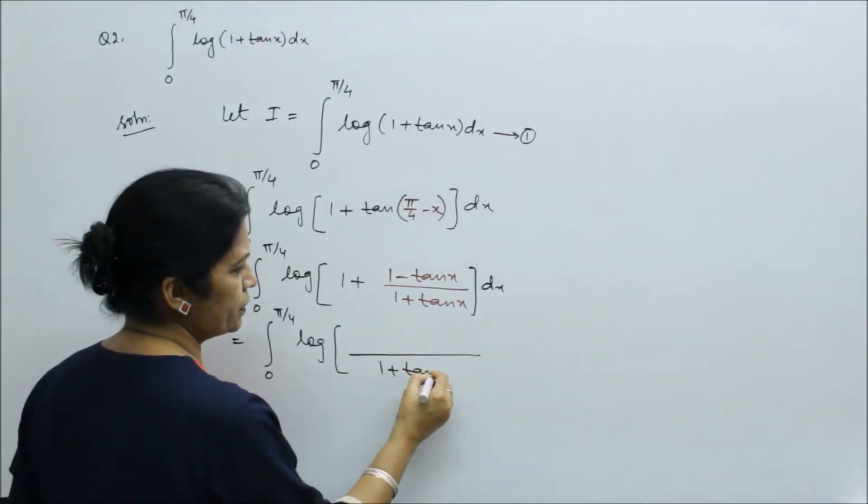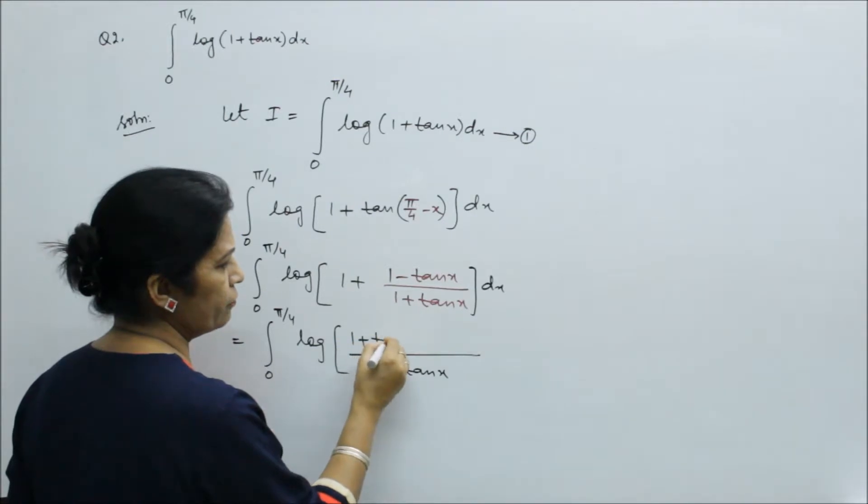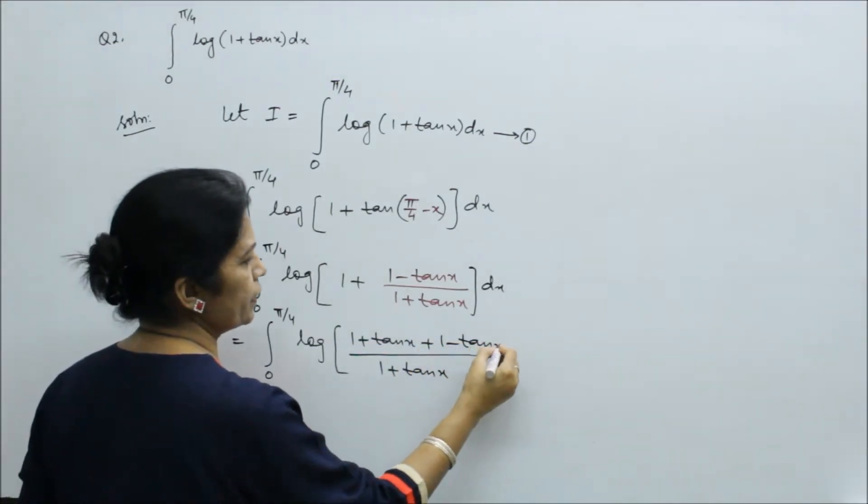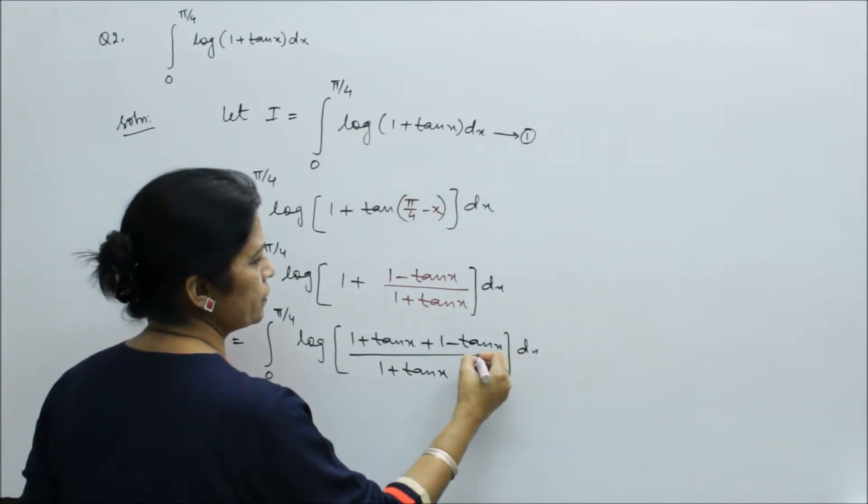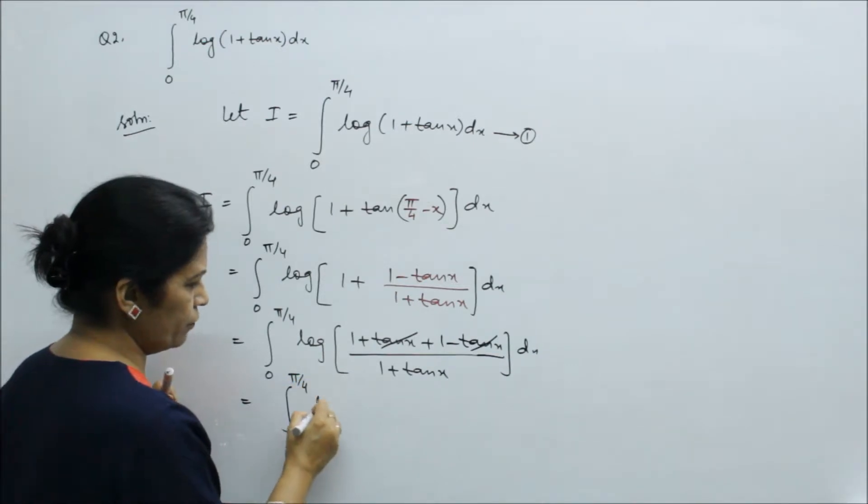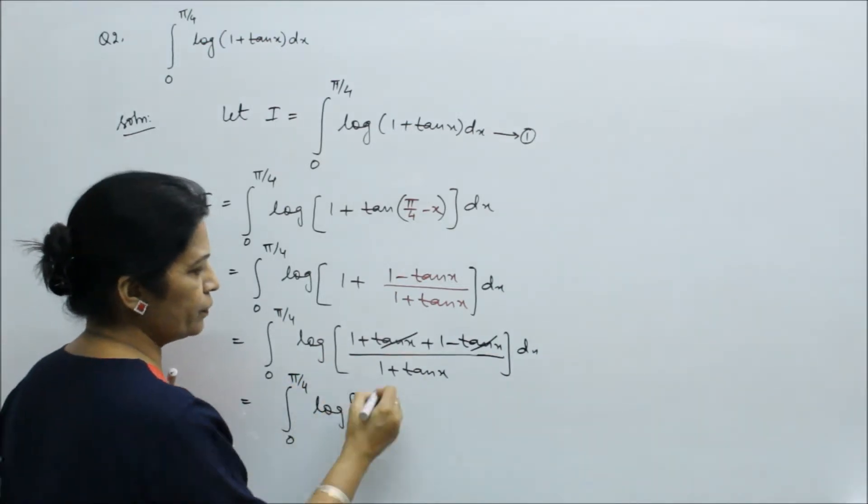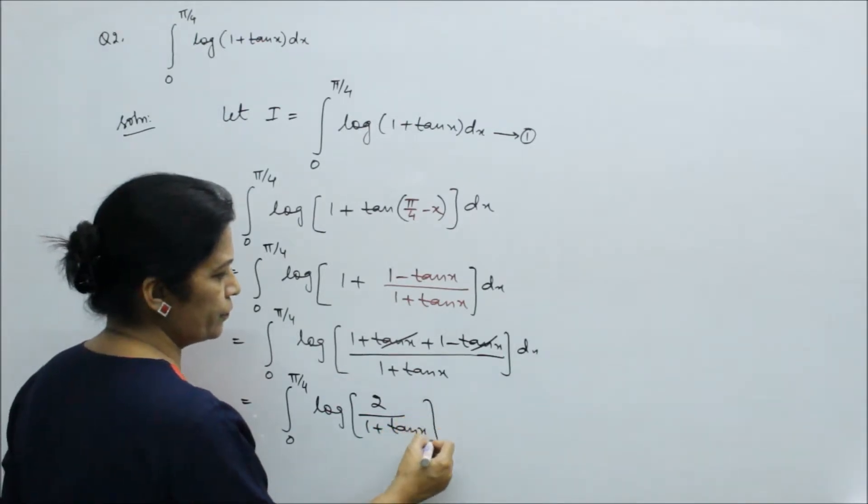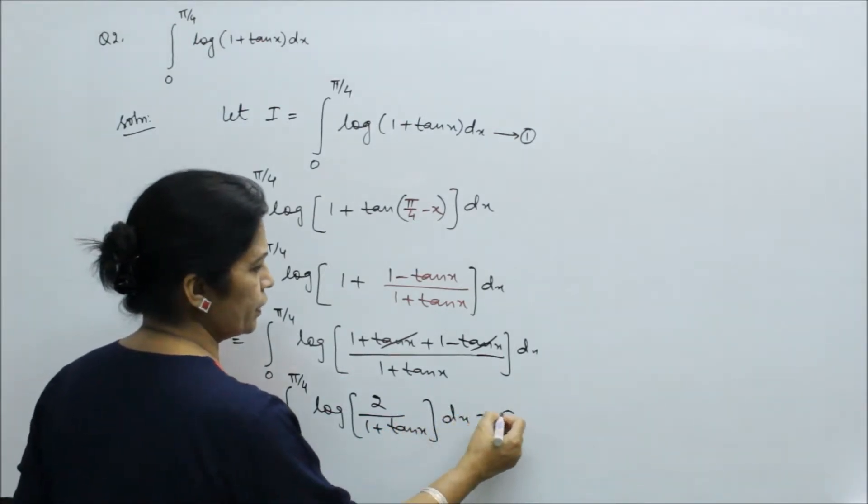After taking LCM in the log bracket, it is 1 + tan x in the denominator. Here we get 1 + tan x plus 1 - tan x, dx. You can see tan x cancels off. So it is 0 to π by 4, log of 2 upon (1 + tan x), dx. This is your second equation.